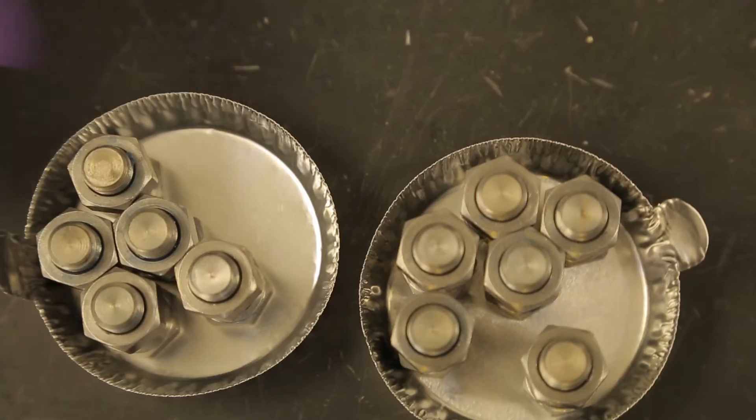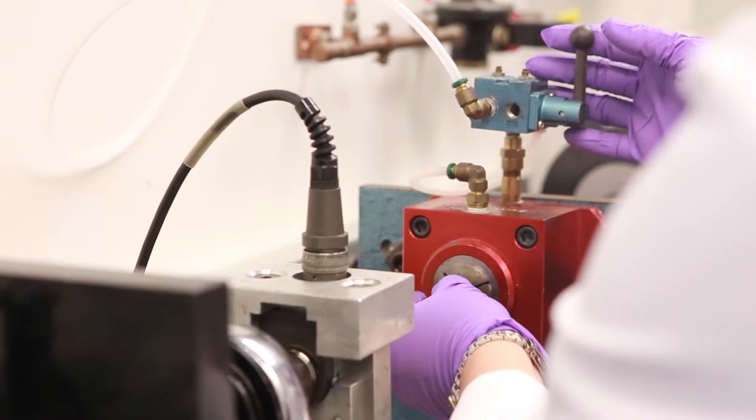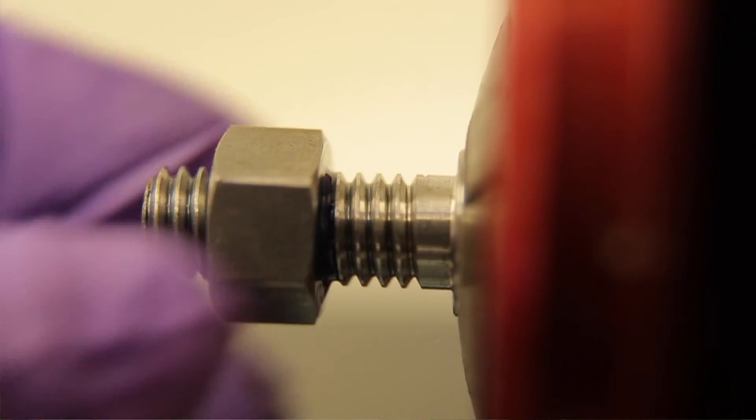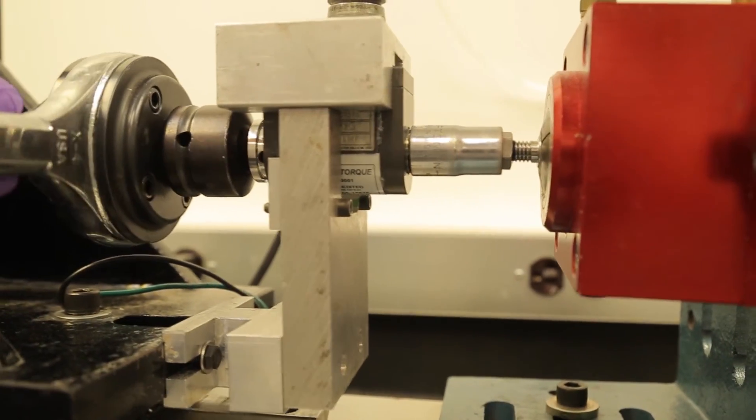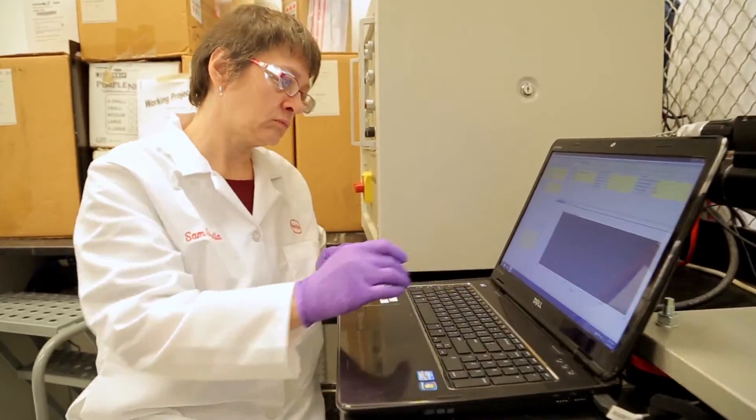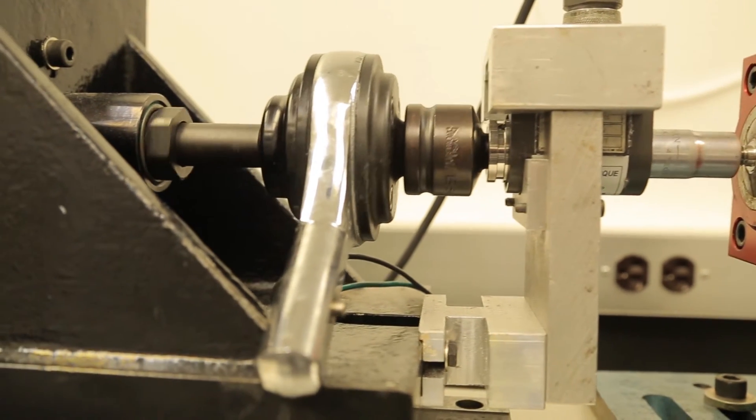One way we test these adhesives is by using straight threaded fasteners like nuts and bolts. A bonded assembly is seated in the torque tester and tested at a defined rotational speed. The initial result recorded is the strength of the first break in the cured adhesive.